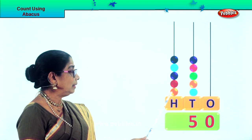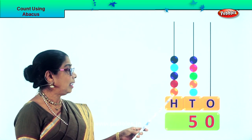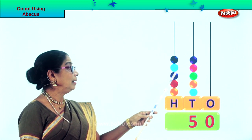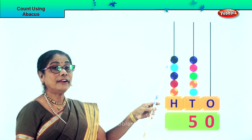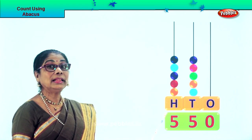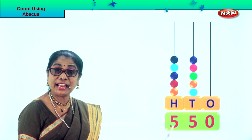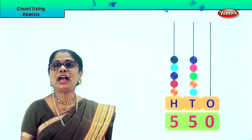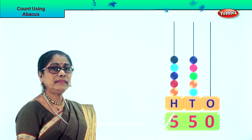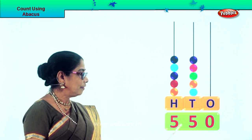Let's go to the 100s place. Count in 100s: 100, 200, 300, 400, 500. There are 5 beats, each 100, so we put down number 5. Now let's read the number: 550.